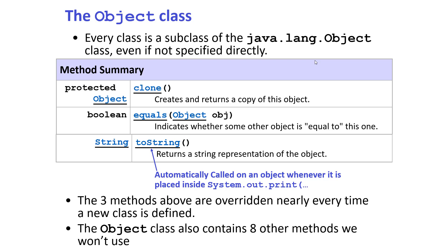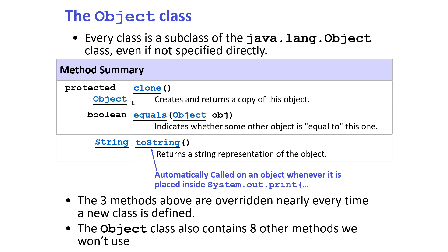The Object class has a number of methods implemented. Whenever you create a class, it is advised that you override three methods defined in the Object class: clone, equals, and toString. The clone method creates a copy of the object. So if you create a class like Circle, it's advisable to write a clone method for Circle, which will override the clone method already in the Object class.